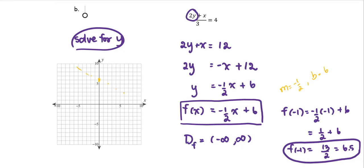So we get a line for this graph. And then at the point negative 1, 6.5, located on the line.